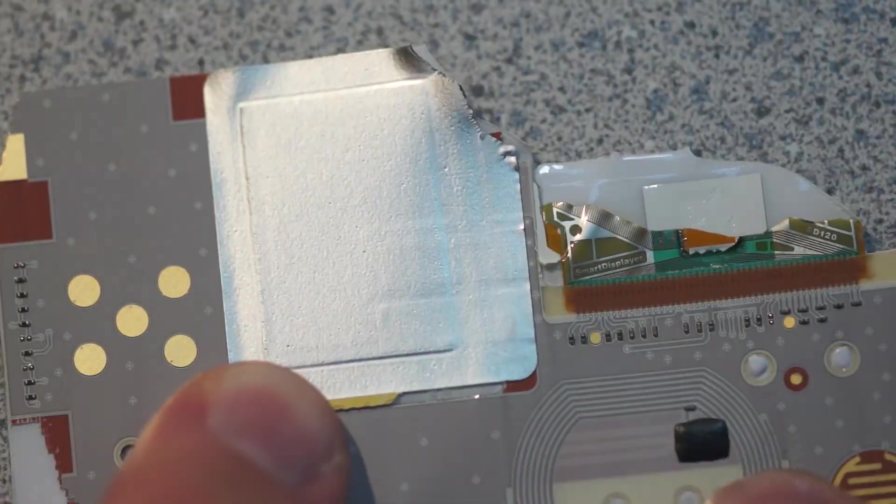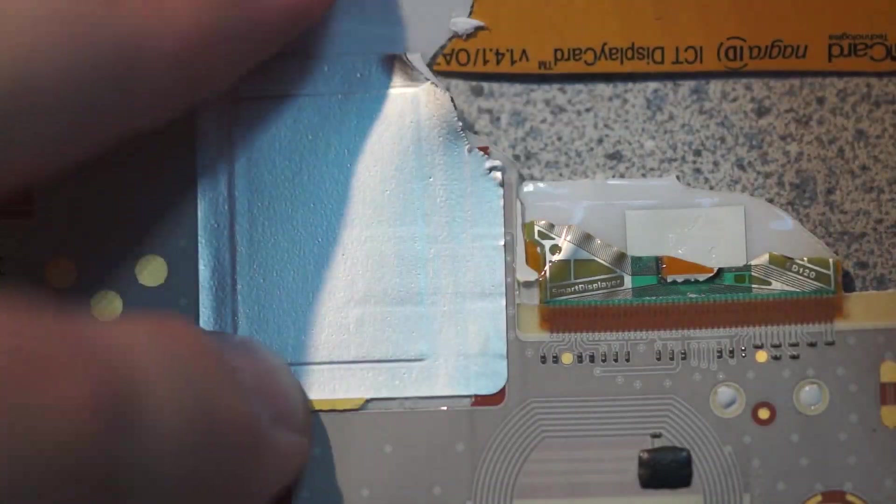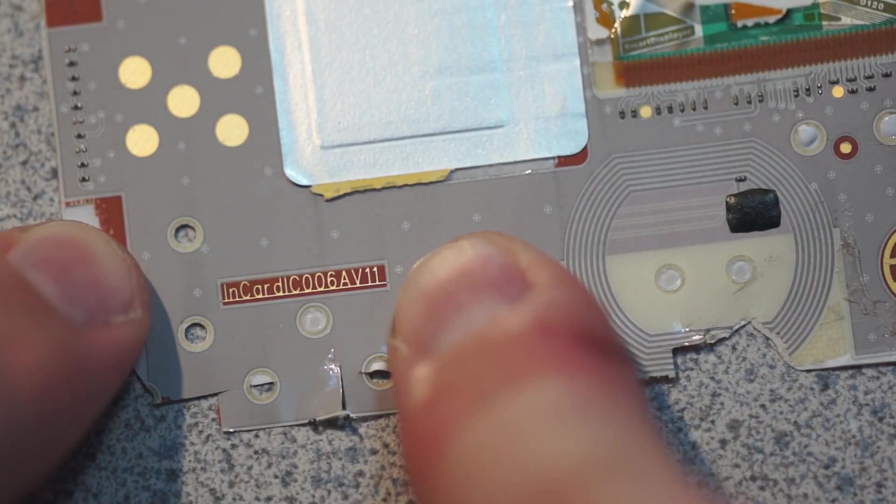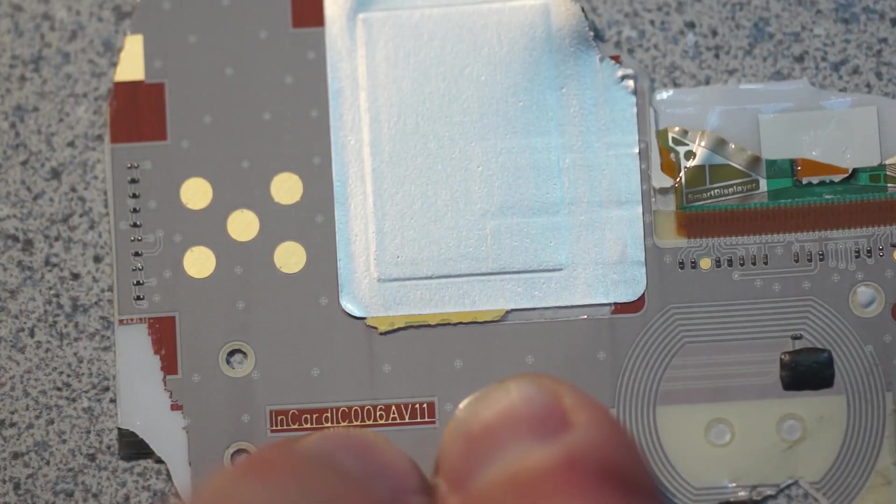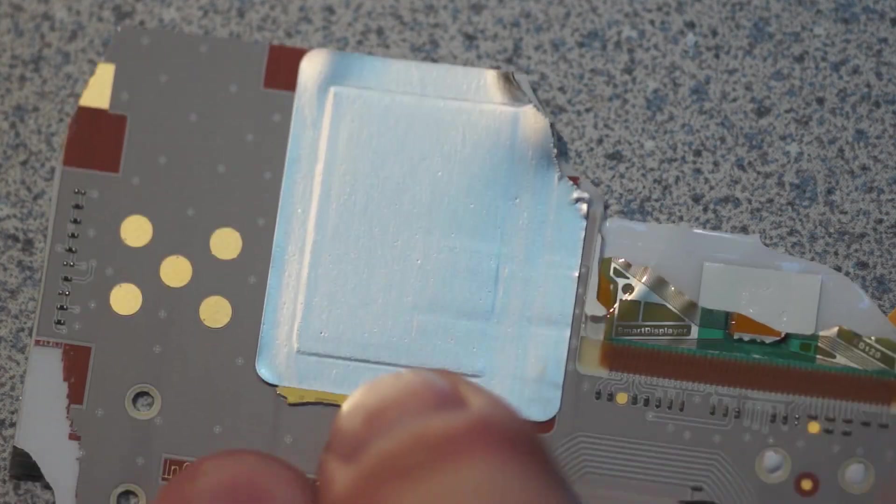Obviously this is the bottom half. Look at that, smart display. The display is integrated in. This is an In Card C006 AV1. This I would bet is the battery - it's presumably like a sheet battery.